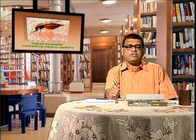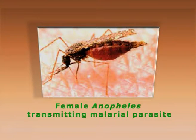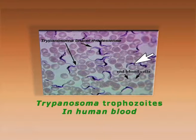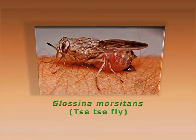Coming to vector-borne protozoa, one of the dreadful diseases, malaria, is caused by Plasmodium vivax and other species, transmitted by the female Anopheles mosquito when sucking blood. These are the gametocytes of Plasmodium falciparum, the causal organism of malignant malaria in human blood. Another important vector-borne protozoa is Trypanosoma, transmitted by the tsetse fly or Glossina morsitans, causing African sleeping sickness.